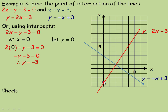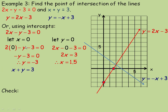For the second line, x plus y equals 3, we'll do the same thing. Putting 0 in place of x: 0 plus y equals 3, so y equals 3. The y-intercept for this line is at 3. To find the x-intercept, we put 0 in place of y: x equals 3. So the x-intercept is at 3, and we could draw the line.